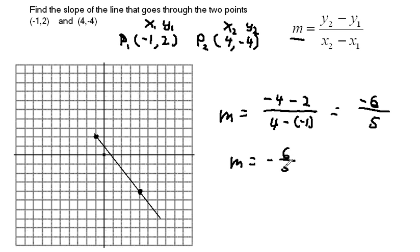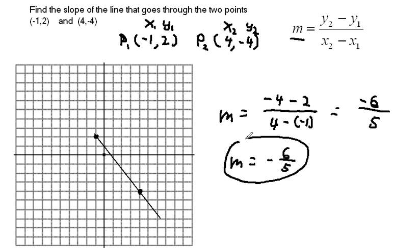Given a problem like this, you don't have to graph the line. You really just have to take the two points, label one of them P1 — it doesn't matter which — plug everything into the formula, and you'll get your answer. It doesn't matter which one is P1 or P2; you'll get the same answer. In this case we do have a negative slope going downhill, and it's negative 6 fifths.